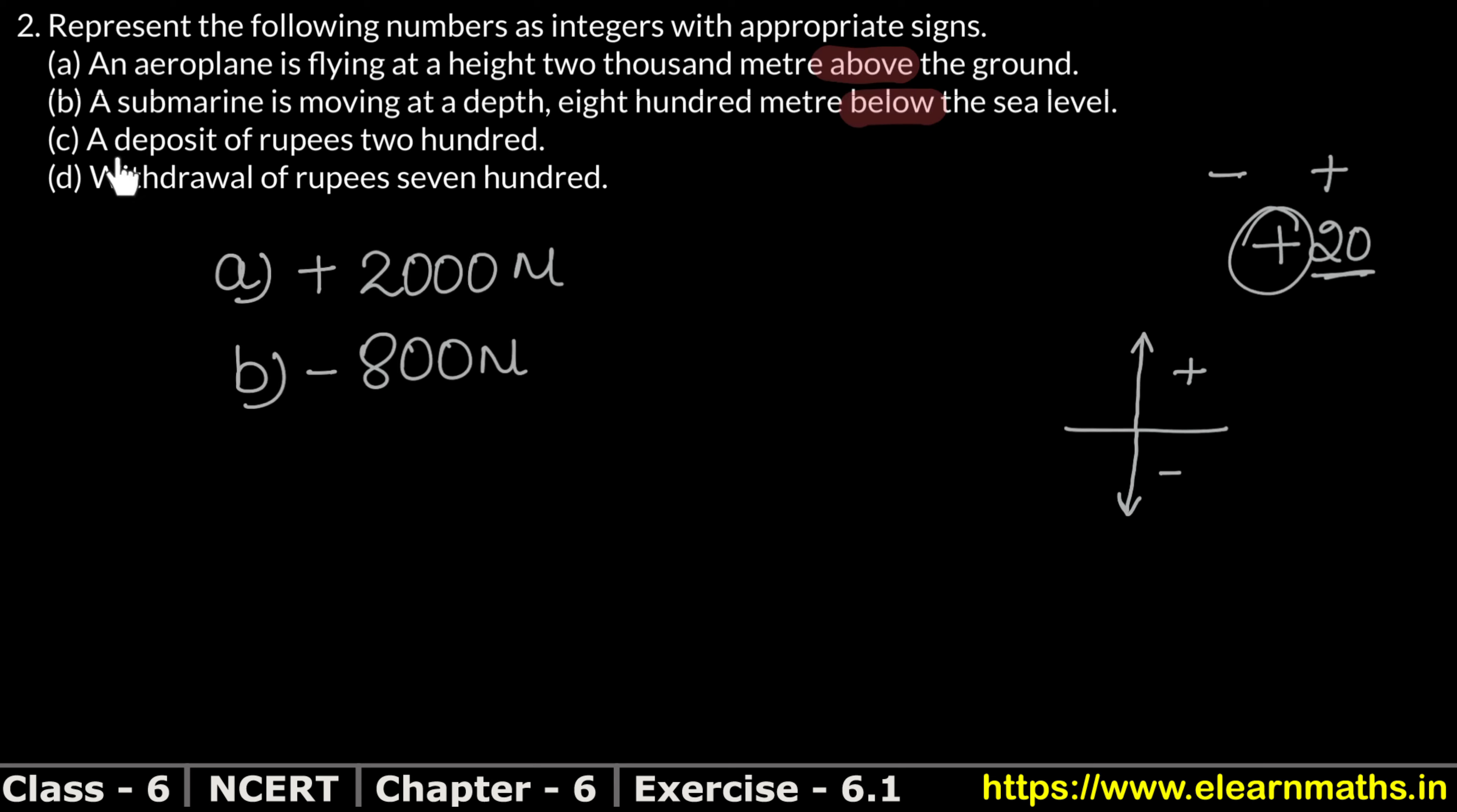Now third point. Part C: a deposit of rupees 200. Look, deposit means: if I have an account, my zero balance account has zero rupees right now. If I deposit 200 rupees in this account, then my account balance will become 200 rupees.